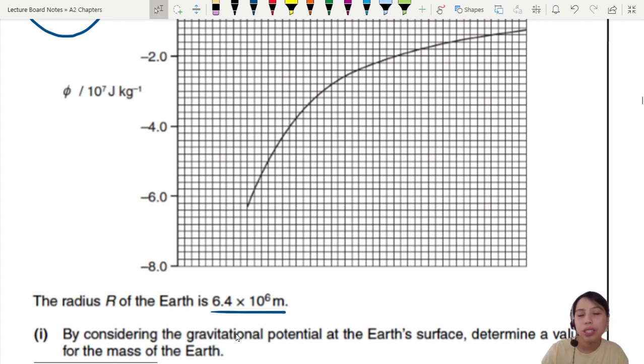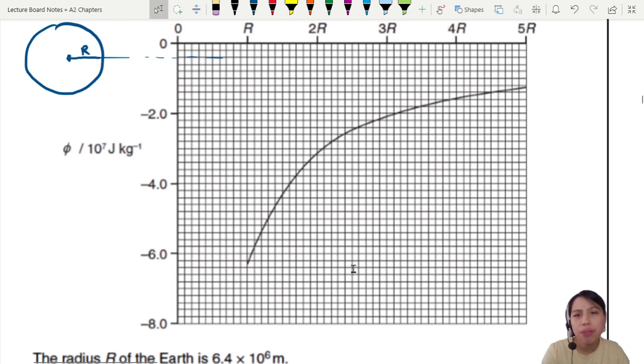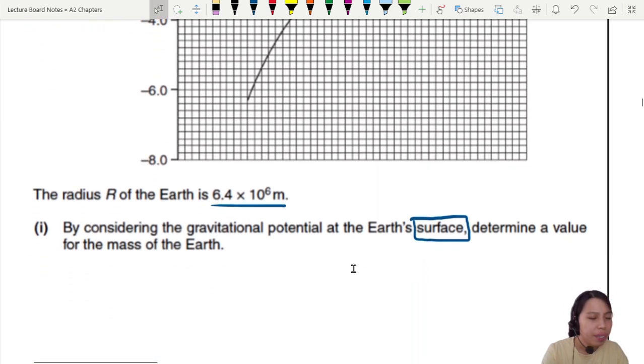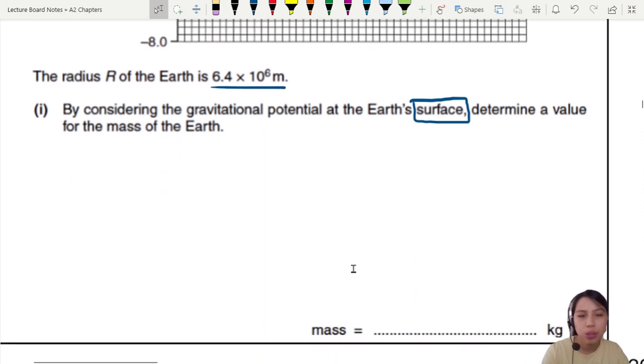By considering the gravitational potential at the Earth's surface only, determine a value for the mass of the Earth. We need to find potential. Do we use a graph or nah? We might have to use the graph to read some values. So the equation for gravitational potential, I think it's given in the first page of the data formula booklet. You can go check it out. But if not, try to memorize it. Potential is GM over R.